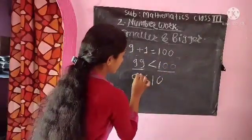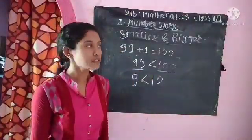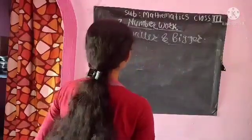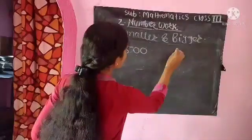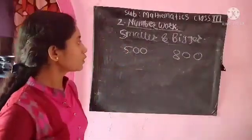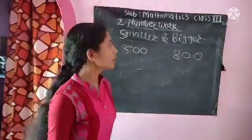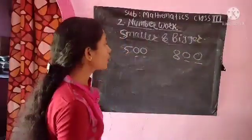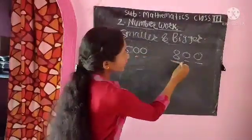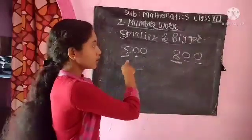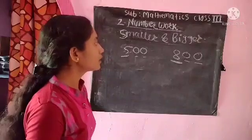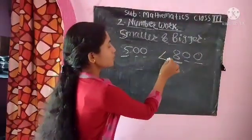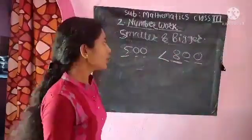Next example: 500 and 800. How do we compare them? The unit place and tens place both have 0, so we need to look at the hundreds place. Here it is 8 and here it is 5. Since 8 is greater than 5, so 500 is smaller than 800.